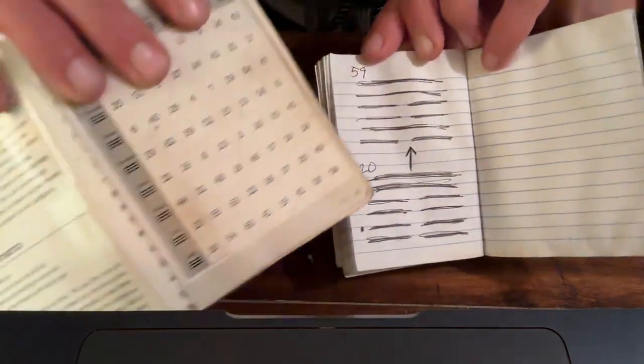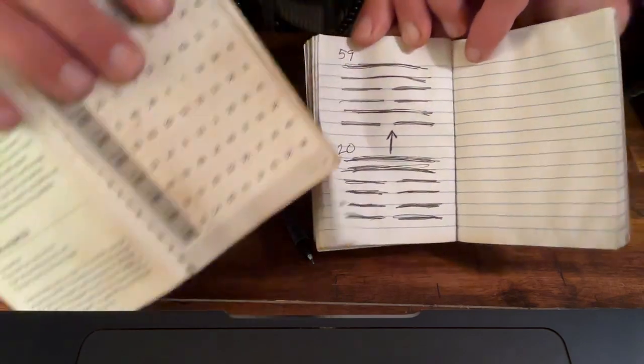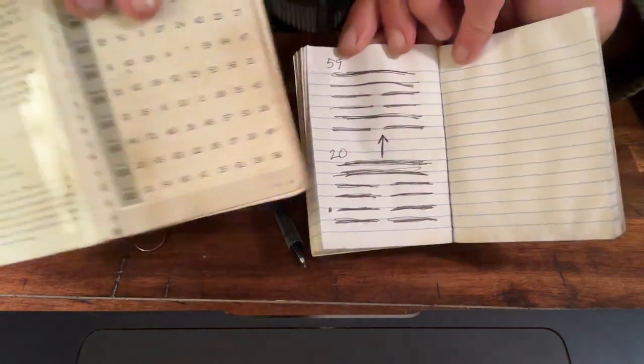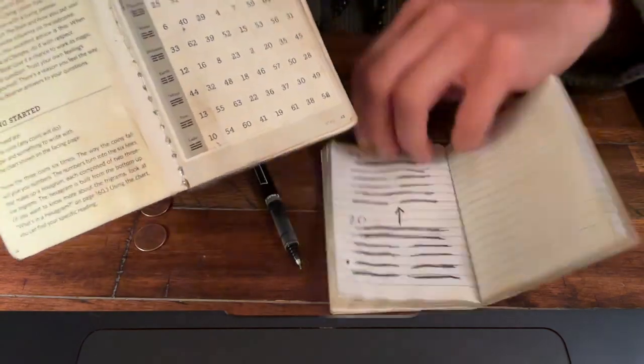So, you've got your hexagram, you've got some changing lines, you've changed from one to the other, you've got your numbers, you've identified it. Now, you look them up in the book. So 20 turns to 59.